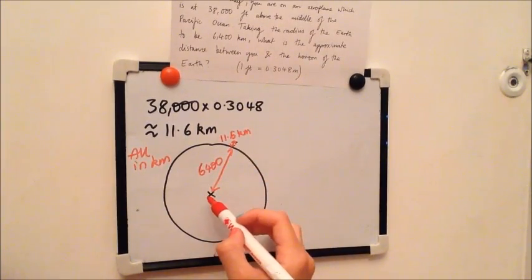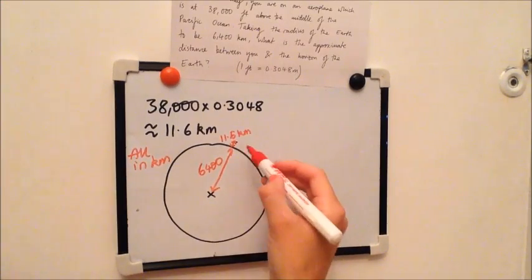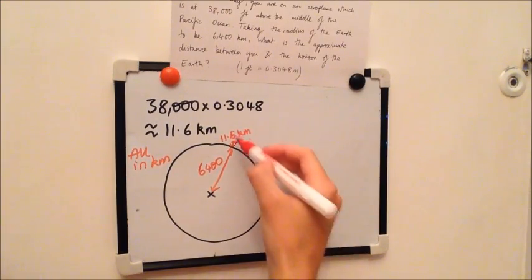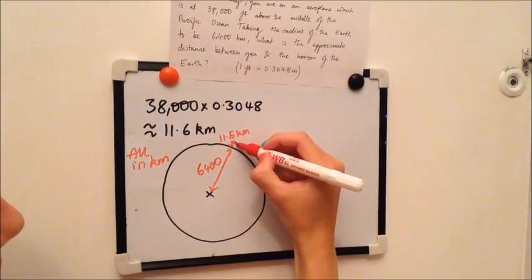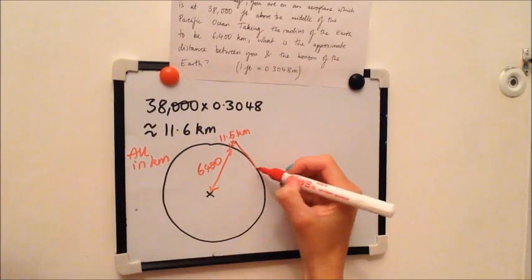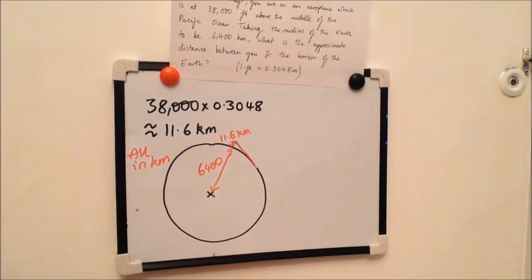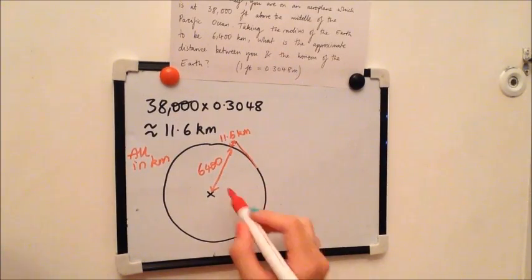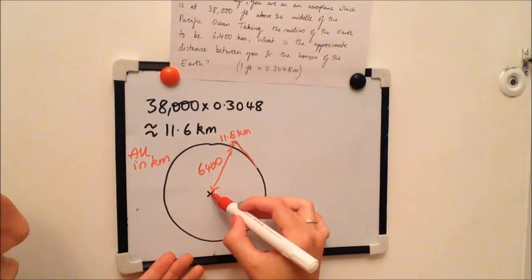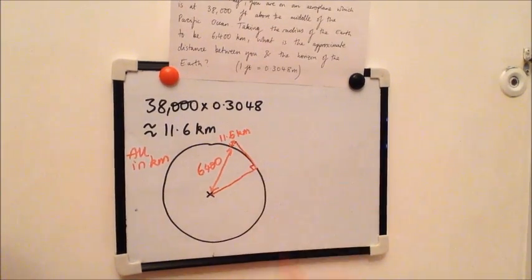And by definition or by intuition you can say that that point has to be at right angles with the radius of the earth, because if you're looking at it this way and say that this is your line of sight and this is the horizon, it's essentially where your line of sight is horizontal with the circumference of the earth. And so if we then draw the radius of the earth onto this point, you know that this has to be a right angle.